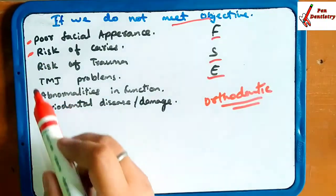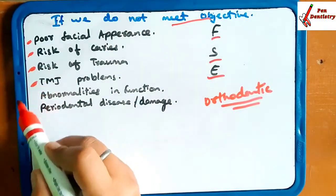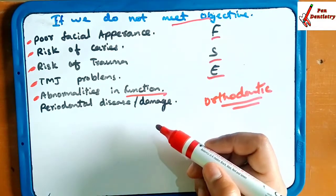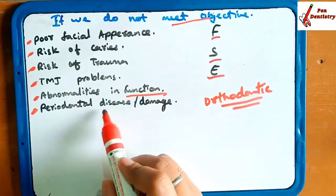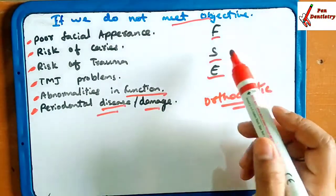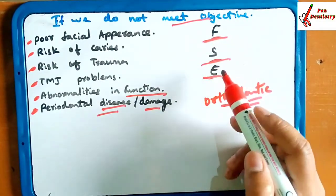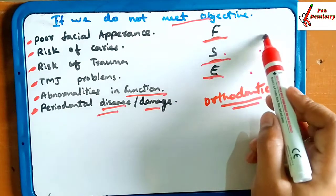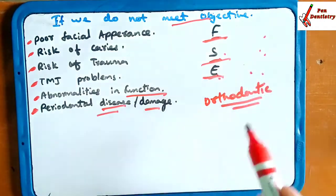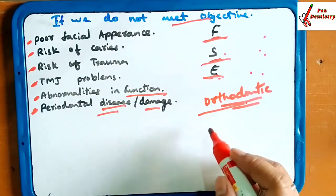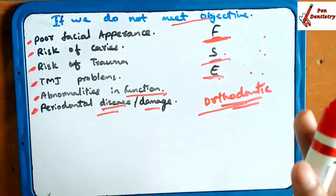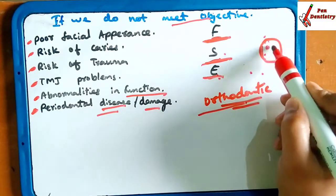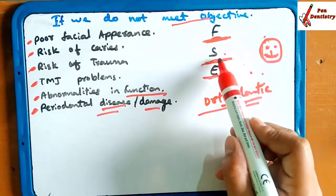If FSE — the Jackson Triad — is not met, there will be risk of caries, risk of trauma, TMJ problems, abnormalities in function, periodontal ligament dysfunction, and periodontal damage. While doing orthodontic treatment, the function of the tooth and the face should be good, and the structure of the face should work properly with balance.